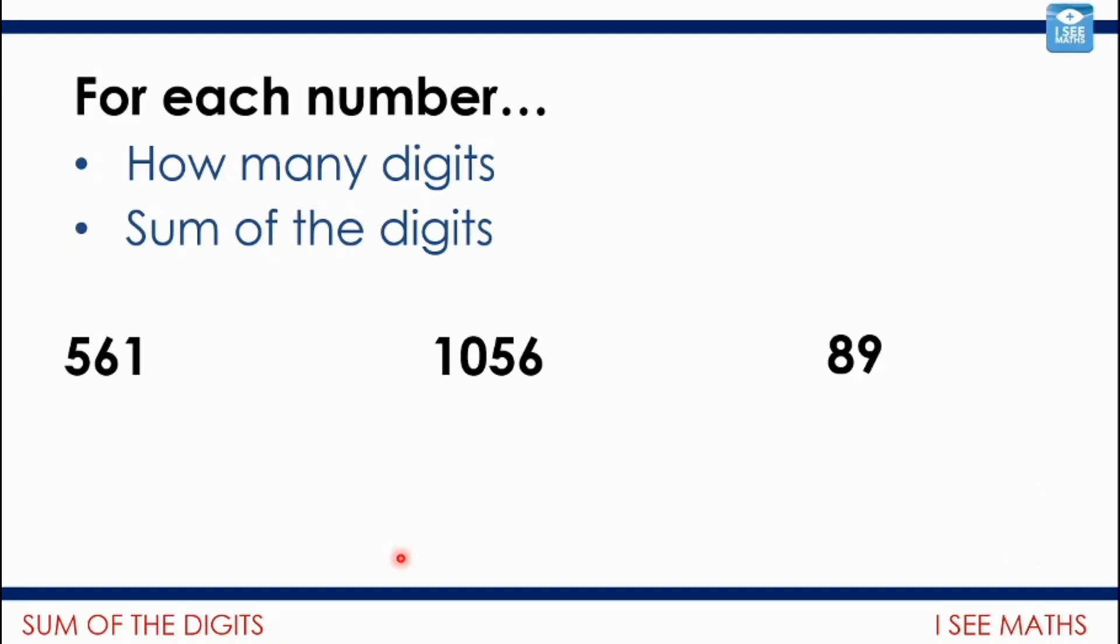Okay, and let's have a look. So 561, sum of the digits there, 5 plus 6 plus 1 equals 12. 1,056, well, the sum of the digits is 12 as well, and it uses the same digits, of course, but there's also this 0, which doesn't change the digit sum. And then 89, sum of the digits there, is 17. So despite being the smallest number, it has the largest digit sum of these three numbers.